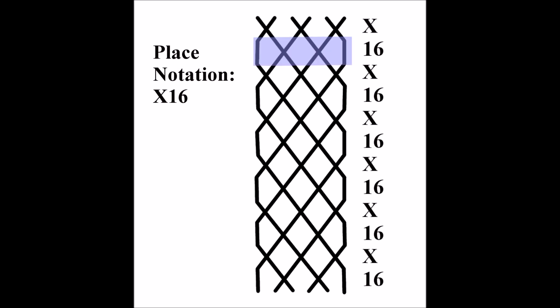Now let's think about what happens between the second and third rows. The bell that's in first place stays where it is — it's leading. The bell at the back also stays where it is — it's lying. The bell in seconds place crosses with the one in thirds place, and the bells in four and five also cross. So we have two bells staying where they are and two pairs crossing. In place notation where there are bells staying put you simply mention those bells, because it's understood that all the others cross. So this change is described as one six, meaning that the bells in firsts and sixths place stay where they are and all the others cross with their adjacent bells.